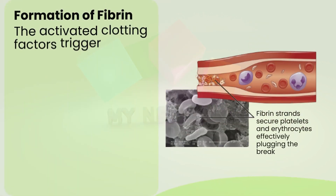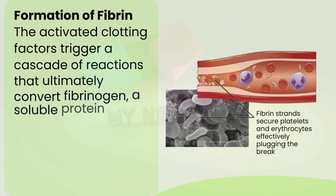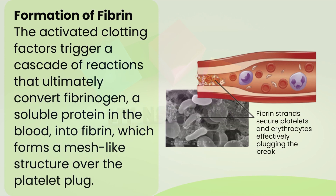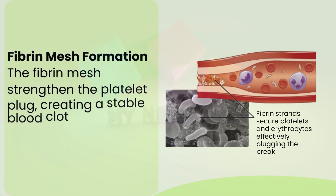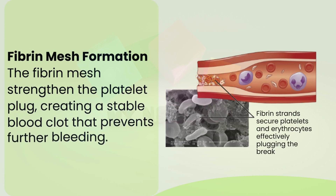Clotting factors, proteins in the blood, are activated by the injured tissue and platelets. The activated clotting factors trigger a cascade of reactions that ultimately convert fibrinogen, a soluble protein in the blood, into fibrin, an insoluble protein which forms a mesh-like structure over the platelet plug. The fibrin mesh strengthens the platelet plug, creating a stable blood clot that prevents further bleeding, as fibrin strands secure platelets and erythrocytes, effectively plugging the break.